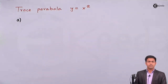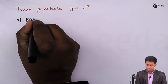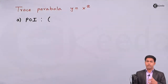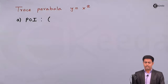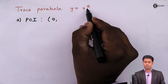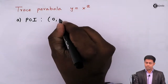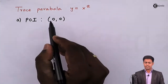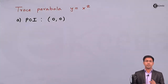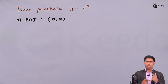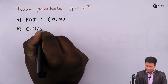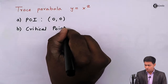The first characteristic is the point of intersection with the coordinate axes. To find it, we put x = 0, which gives y = 0. Then we put y = 0, which also gives x = 0 — the same point. So this parabola intersects the coordinate axes at (0, 0).